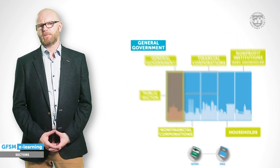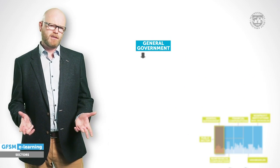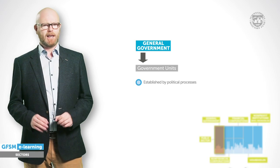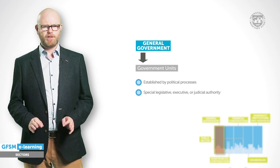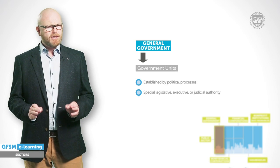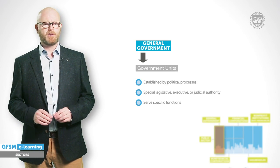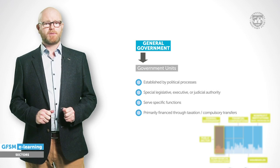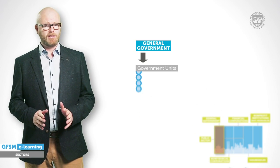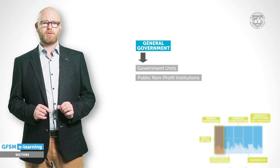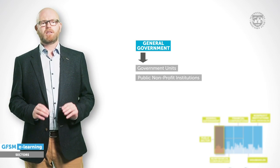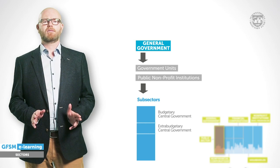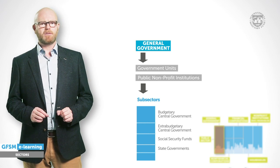Let us start with the general government sector. Which entities are part of this sector? Obviously, government units. These units are unique legal entities established by political processes. They have a special legislative, executive or judicial authority over other units, and they serve specific economic functions such as the provision of goods or services on a non-commercial basis or the redistribution of income and wealth. Their activities are primarily financed through taxation or compulsory transfers. In addition, general government includes non-profit institutions that are controlled by government units. For all those units, GFSM defines five sub-sectors: budgetary central, extra-budgetary central, social security funds, state governments, and local governments.